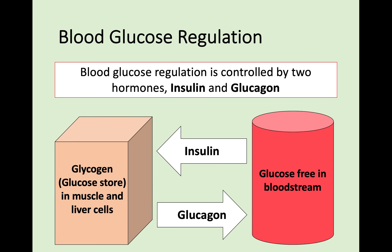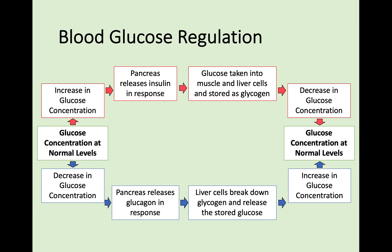The next slide is going to show you this in greater detail — I'd really recommend copying it down as you're very likely to be asked this question. Starting at the middle left of the screen, blood concentration of glucose is at a normal level. If there is an increase in blood glucose concentration — for example if you've just eaten some food — the pancreas receptors will pick up this increase and release insulin in response. This insulin means that glucose is taken into the muscle and liver cells and stored as glycogen, leading to a decrease in your blood glucose concentration back to a normal level.